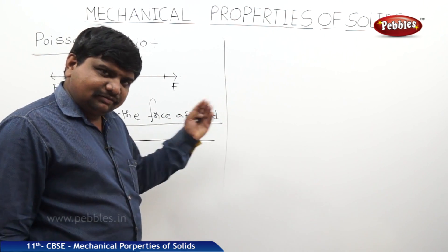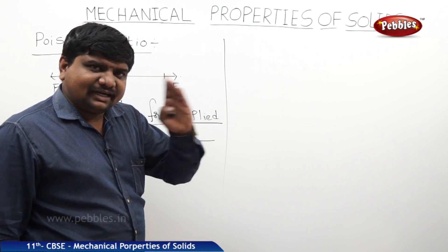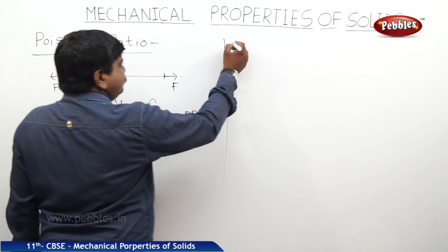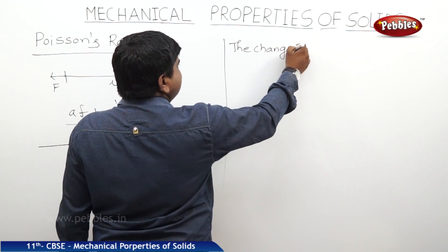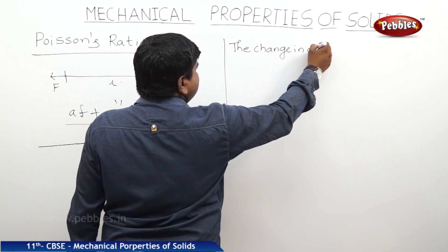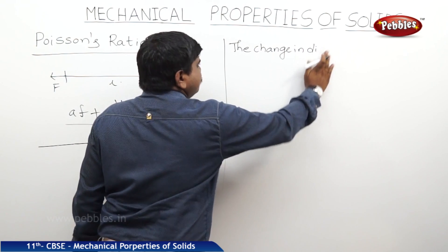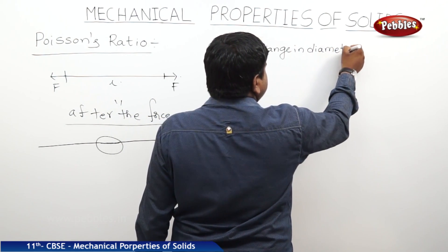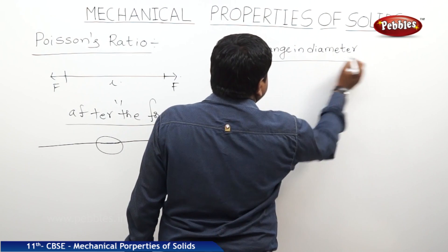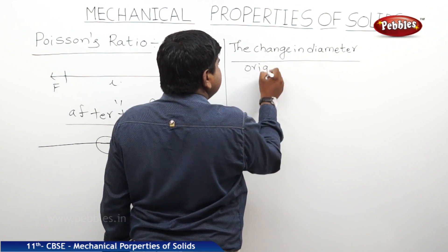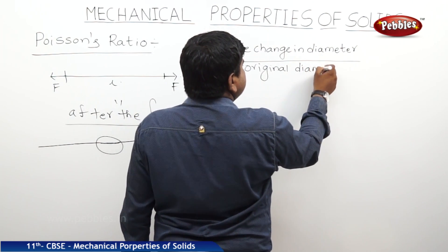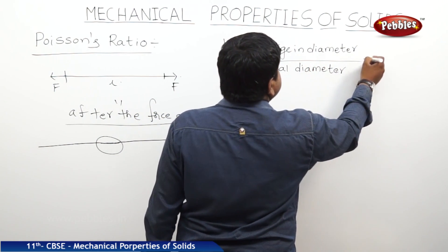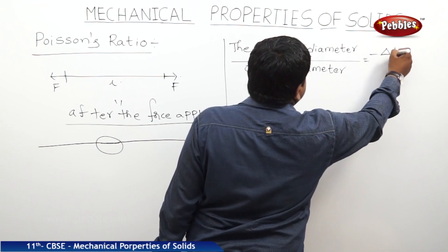If two physical quantities are inversely proportional to each other, we should keep the negative symbol. So, the change in diameter by original diameter is equal to minus delta d by d.